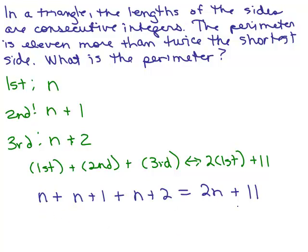Now we have an equation. To solve this equation, let's simplify the left-hand side by combining like terms. Remember N plus N plus N, you've got 3N. You add the coefficients, 1 plus 1 plus 1. 3N plus 3 is equal to 2N plus 11.